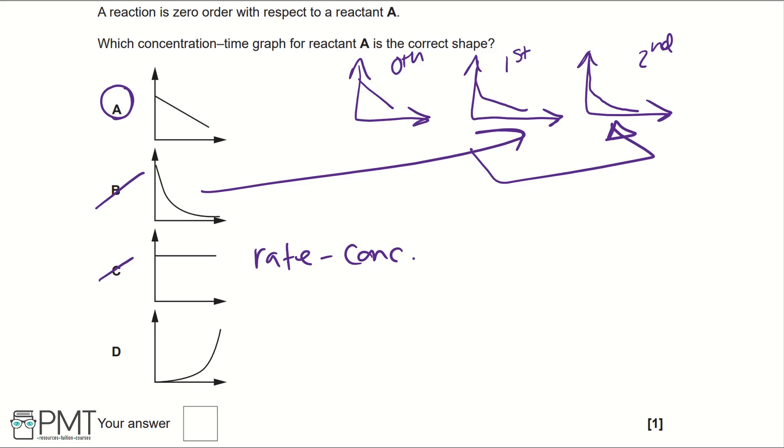And then D, well, concentration would decrease over time, so it cannot be D, because that's saying that concentration is increasing over time, which would not make sense as the reaction continues.